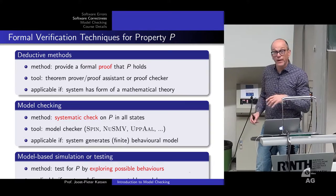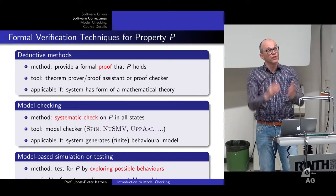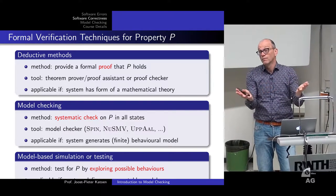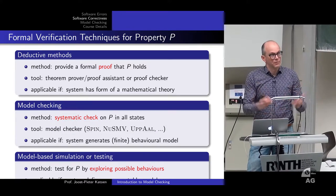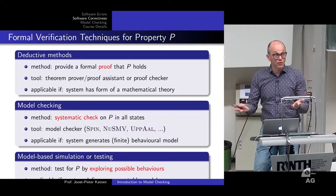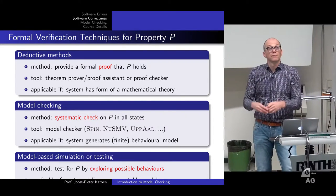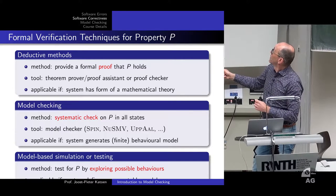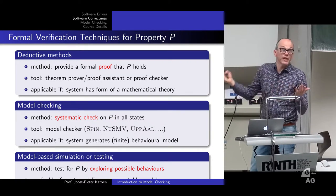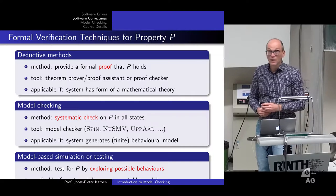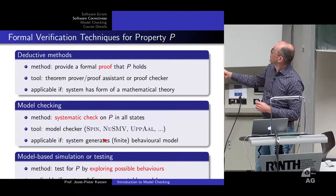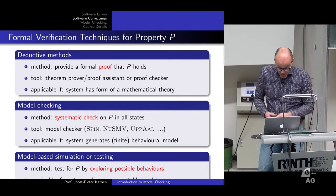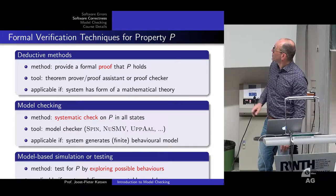In model checking, the idea is to make a model and systematically check a certain property P in all states of the model — think of an automaton-like model. This is applicable if you can find a finite model of your system. We will also learn that for some infinite state models, you can still do things. There is also model-based testing: if you have a formal model of your system, you can use it for automated test generation, steering the test generation process from the formal requirements.